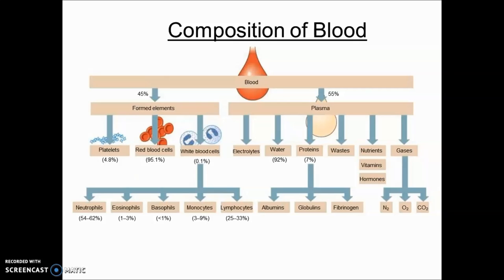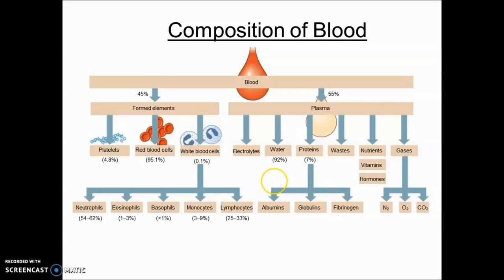Blood has the highest plasma constituent, which is straw-colored. Plasma contains water as its highest content, followed by proteins, and also contains electrolytes — helping in maintenance of pH — nutrients, vitamins, hormones, and gases like nitrogen, oxygen, and carbon dioxide. There are three plasma proteins: albumin, globulins, and fibrinogen — in decreasing order of content. Albumin maintains plasma oncotic pressure, globulin is associated with immunity, and fibrinogen helps in clotting.